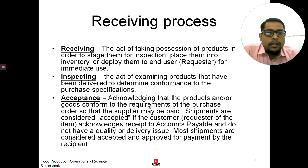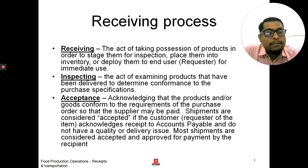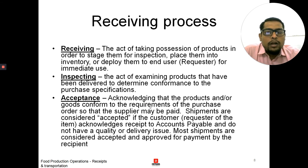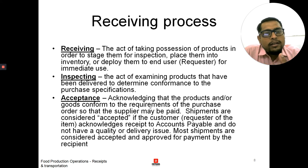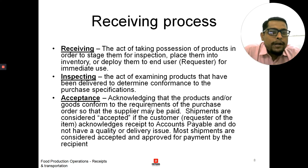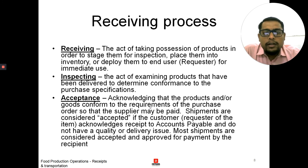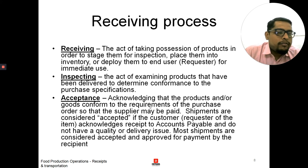The second point is inspecting. When we take physical possession of the product, we inspect it. Inspecting means the act of examining products that have been delivered to determine conformance to the purchase specification. For example, we may have specified sirloin steak that should be from the UK, with a weight of 170 grams plus or minus 10 grams. We inspect all those things as per our specification. If it is fully confirmed that the product is as per our specification, we will take possession of it; otherwise we will not.